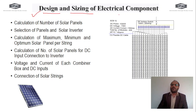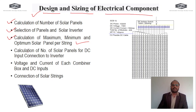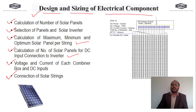The second parameter is the design and sizing of electrical components. This covers calculation of the number of solar panels, selection of panels and solar inverters, reading of datasheets, calculation of maximum, minimum, and optimum number of solar panels per string, calculation of panels for DC input connection to the inverter, and voltage and current of each combiner box. We also develop AutoCAD diagrams showing how to connect solar panels in strings, string voltage, connecting strings to a combiner box, and formulating one array.